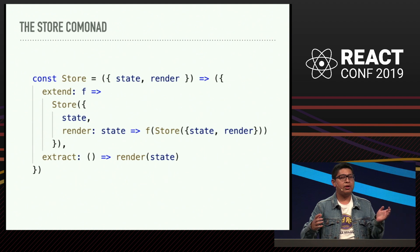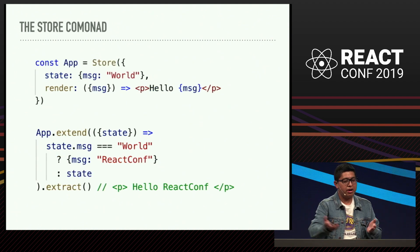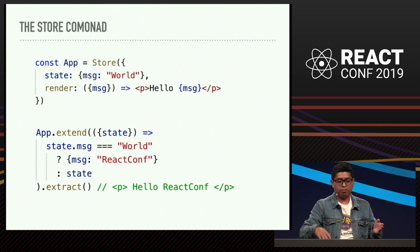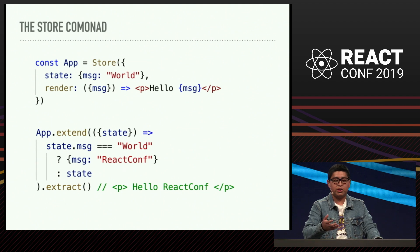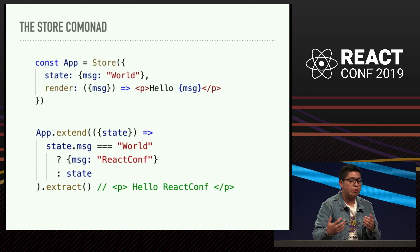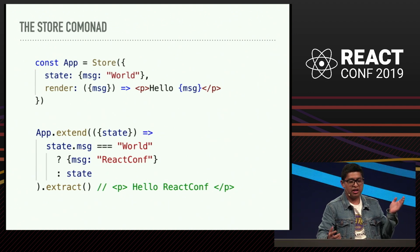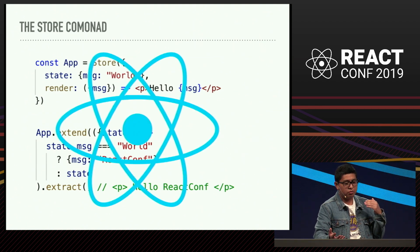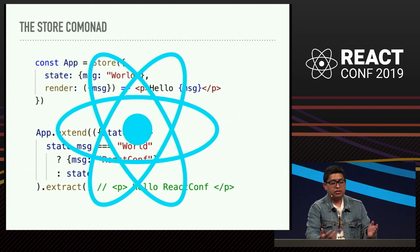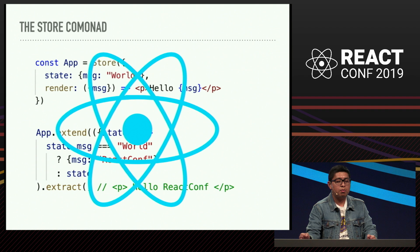You might have heard this but not really understood it, but there you have an example. There's the ApplicationStore object — there's a state, a simple object, and a render function which will render a React component. And there we have an example using that Store CoMonad pattern. In Extend we're going to check if the message inside the state is a word and change it for 'React.conf', and Extract will simply render. React is a perfect example of a Store CoMonad pattern.